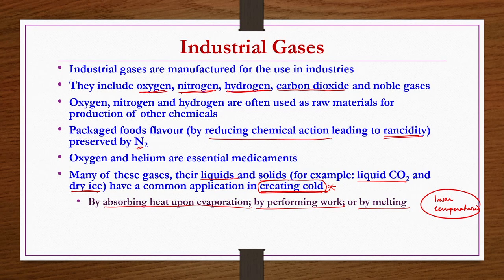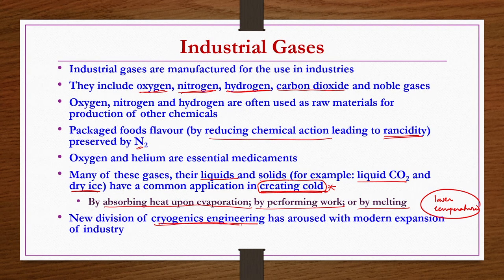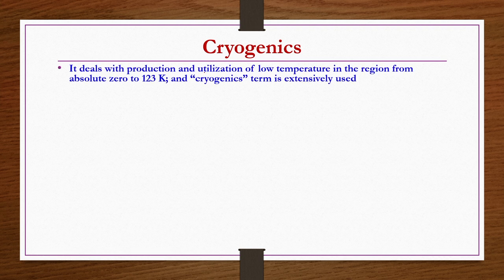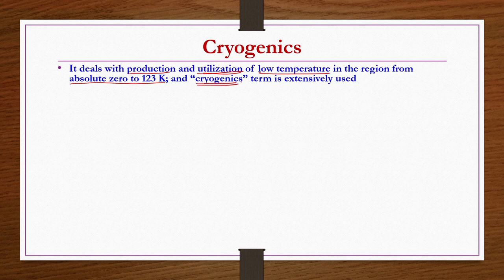Because of applications at lower temperatures associated with these gases, there is a special division called cryogenic engineering. Cryogenics, as the name indicates, deals with both the production and utilization at low temperatures. What is the range of low temperature? It is in general absolute 0 to 123 Kelvin. Production and utilization occurring at such low temperatures are associated with cryogenics.